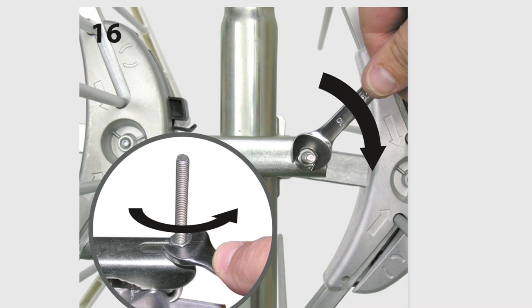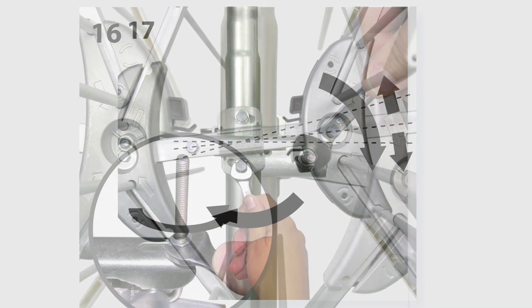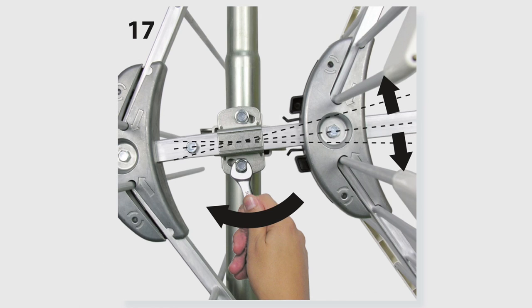It's at this point that they actually have you attach to the mast. You slide everything over and tighten it up with a 10 millimeter wrench. Then adjust the tilt of the antenna so it's perfectly level.